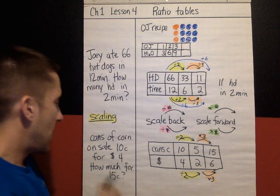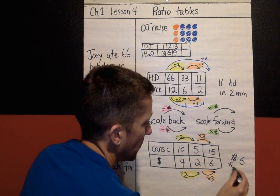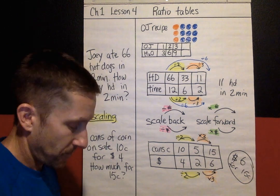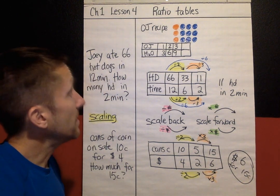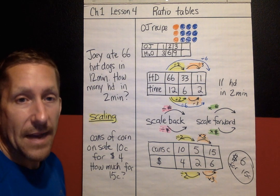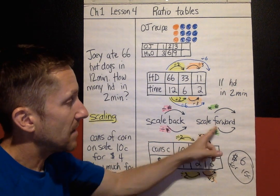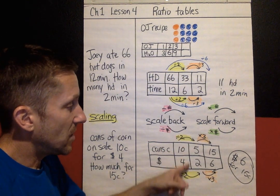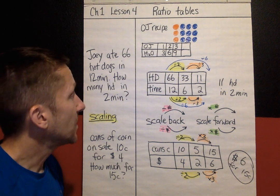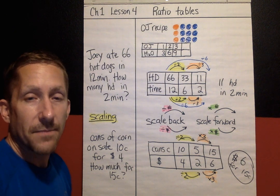So the answer is $6 for 15 cans. To summarize this lesson on ratio tables: the big idea is that you must multiply or divide by the same number to keep the ratio equal. You can scale a ratio back to make it smaller, and scale it forward to make it larger. If you make a mistake, back up and try another number. Practice problems are coming in class — until next time!